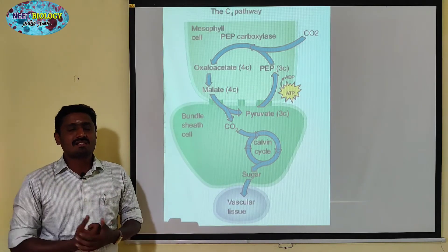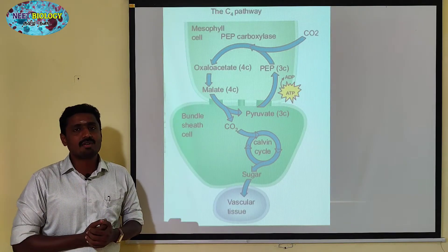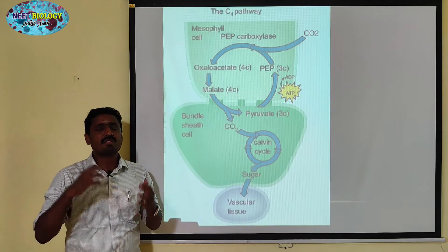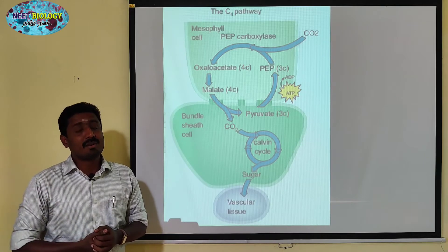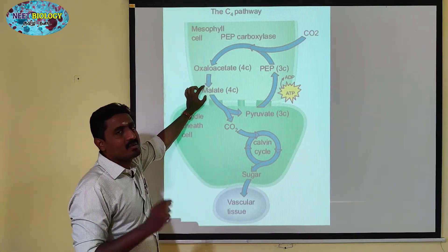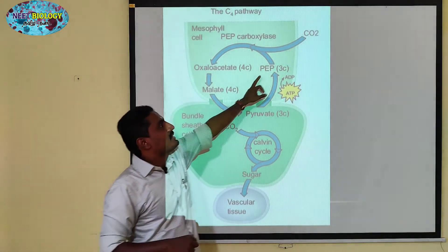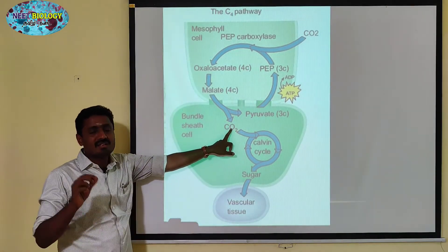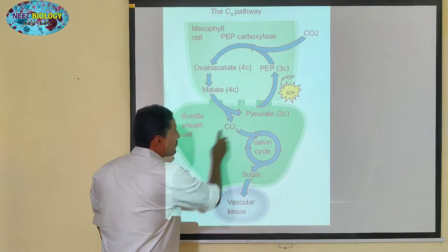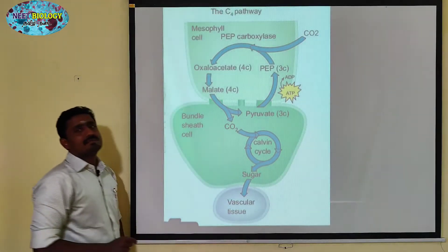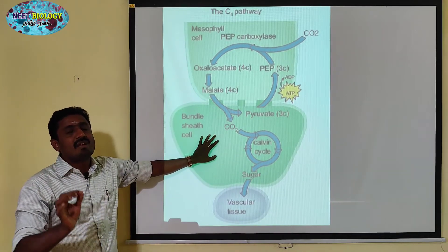Malic acid is decarboxylated — CO2 is released from the malic acid. The remaining compound is PEP, which returns to the mesophyll. In the bundle sheath cells, the released CO2 is absorbed by RuBP, which is present in the agranal type of chloroplast in the bundle sheath.